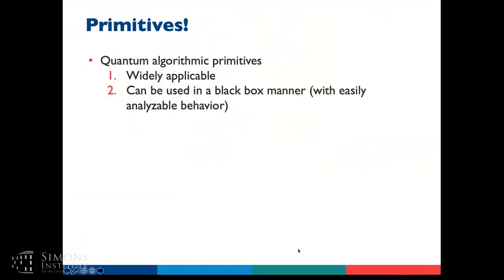When I talk about a quantum algorithmic primitive, what do I mean? A quantum algorithmic primitive is just an algorithm, but it should be a tool or a building block that can be used to design other algorithms. So it should be widely applicable, and ideally it can be used in a black box manner — you just have a black box that accomplishes some algorithmic task and you can easily understand its behavior without having to open it up and deal with the innards.